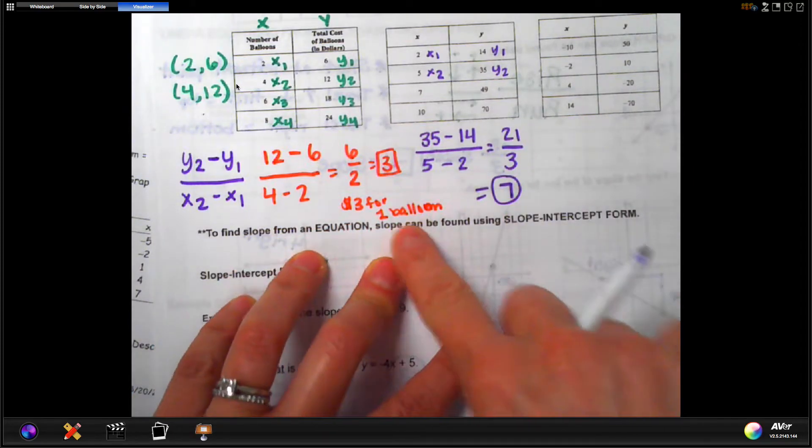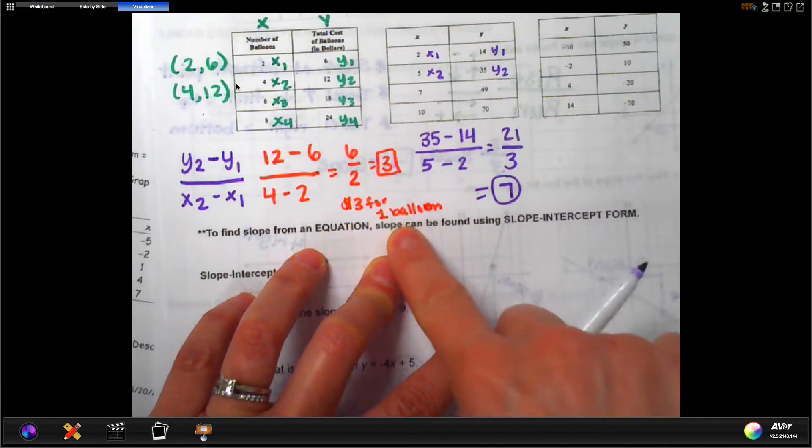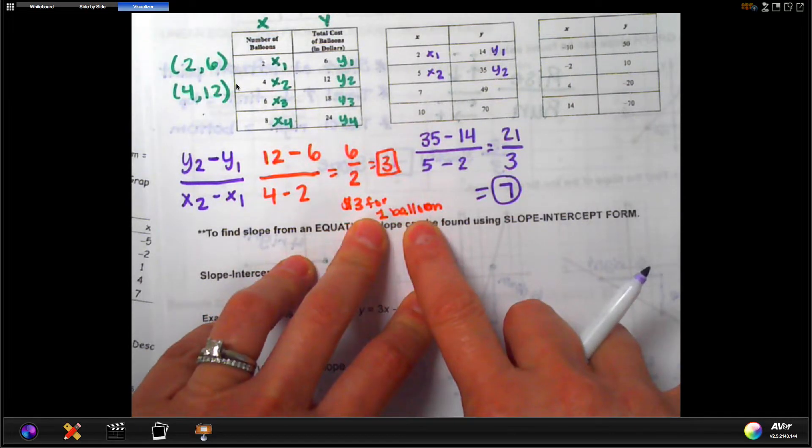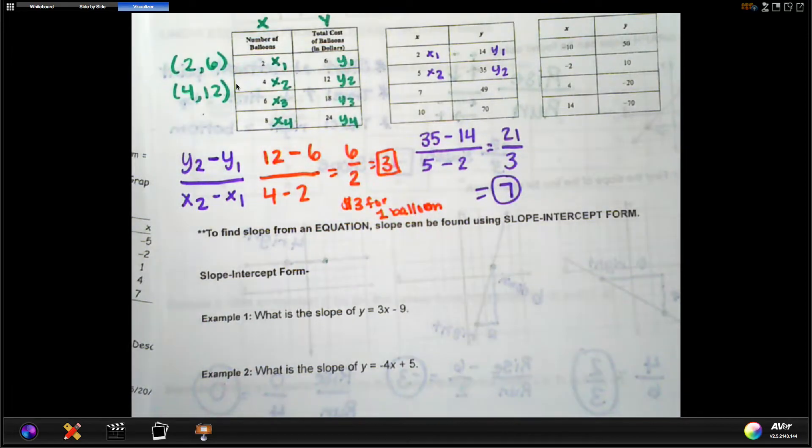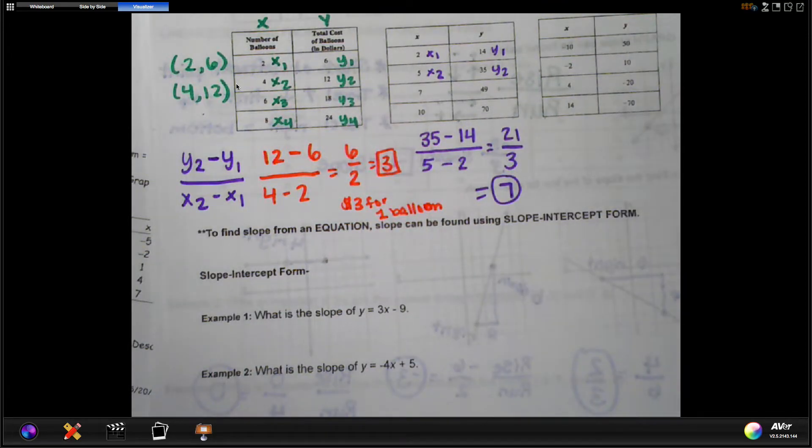Now, I can't put a real-world situation on that, like the $3 for a balloon, because it doesn't tell me what it's talking about. All right, last one. What do we do when we have negatives? We are going to do the same exact thing. But we have to be aware of the negatives when we are using them in the formula.